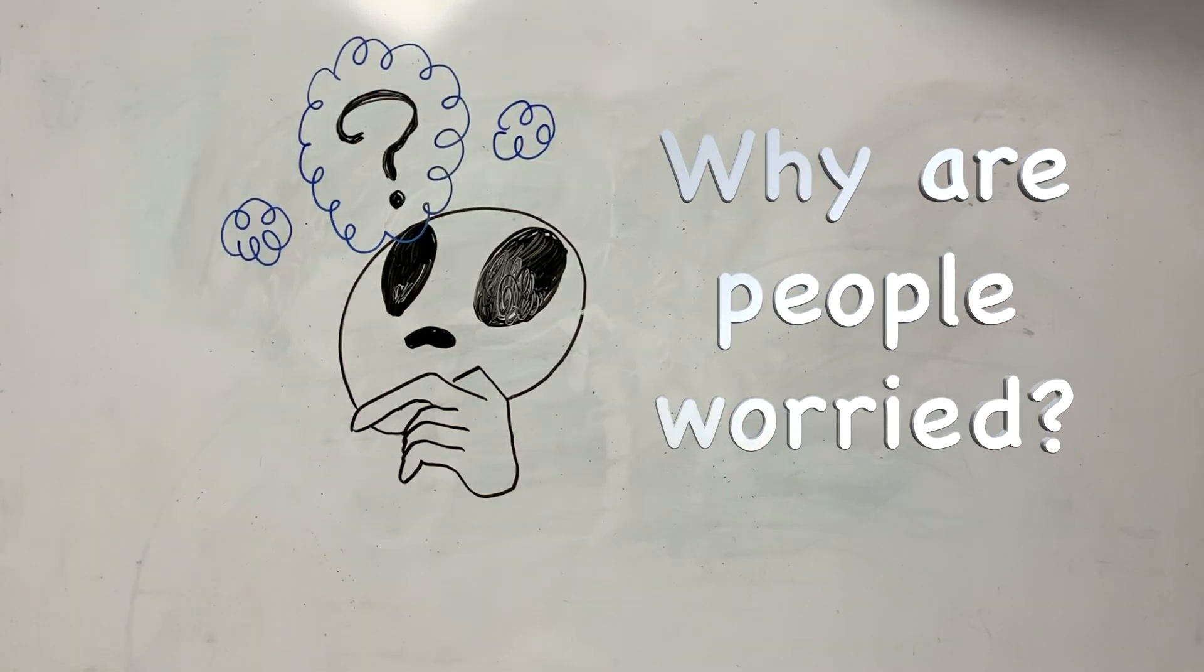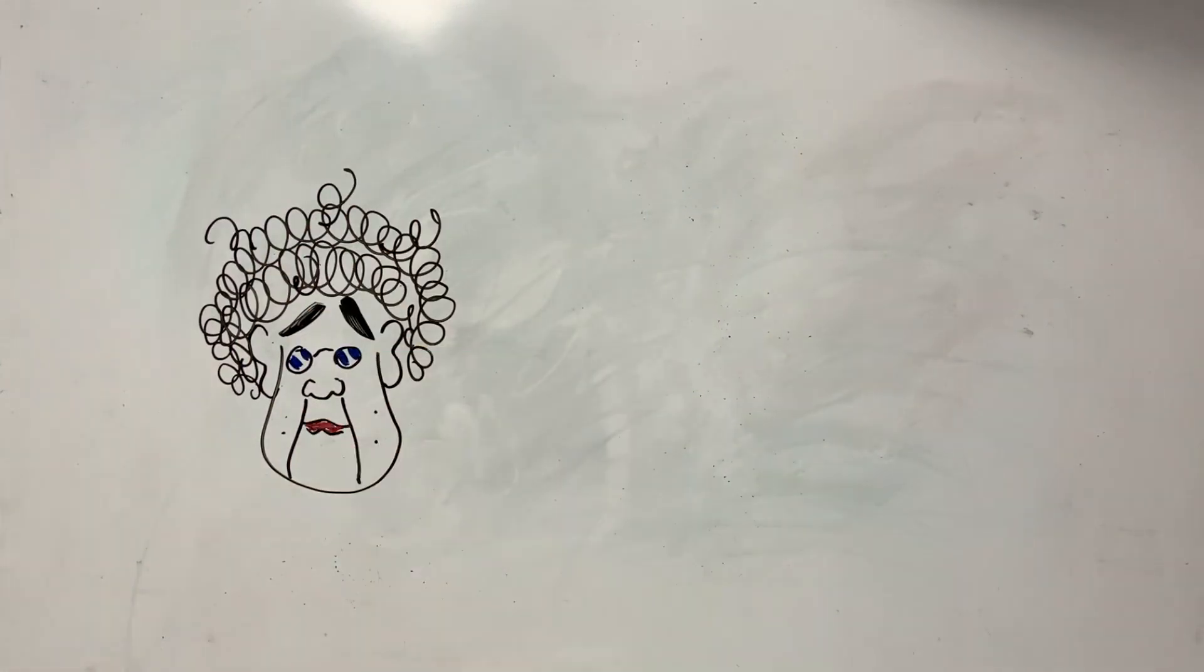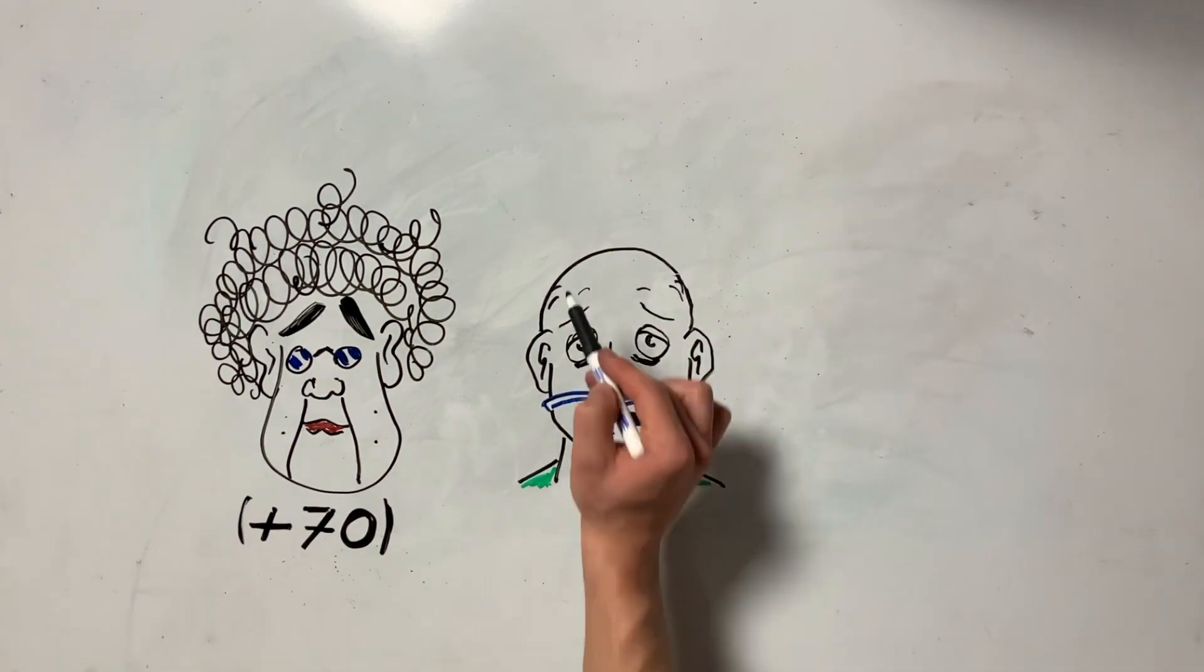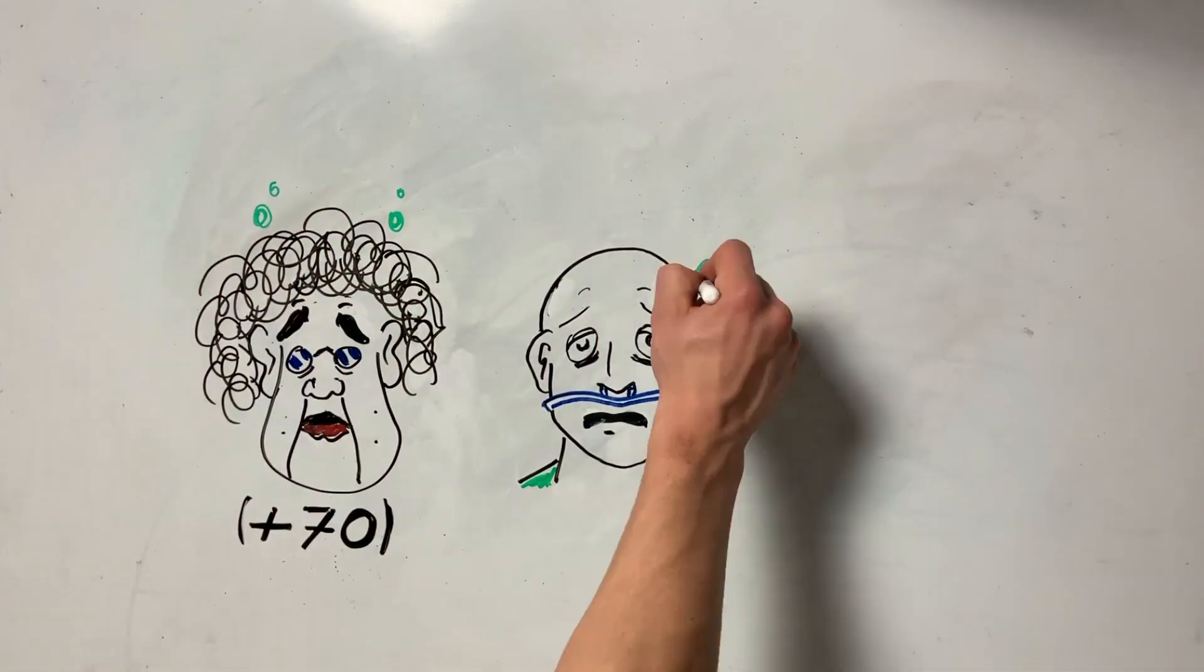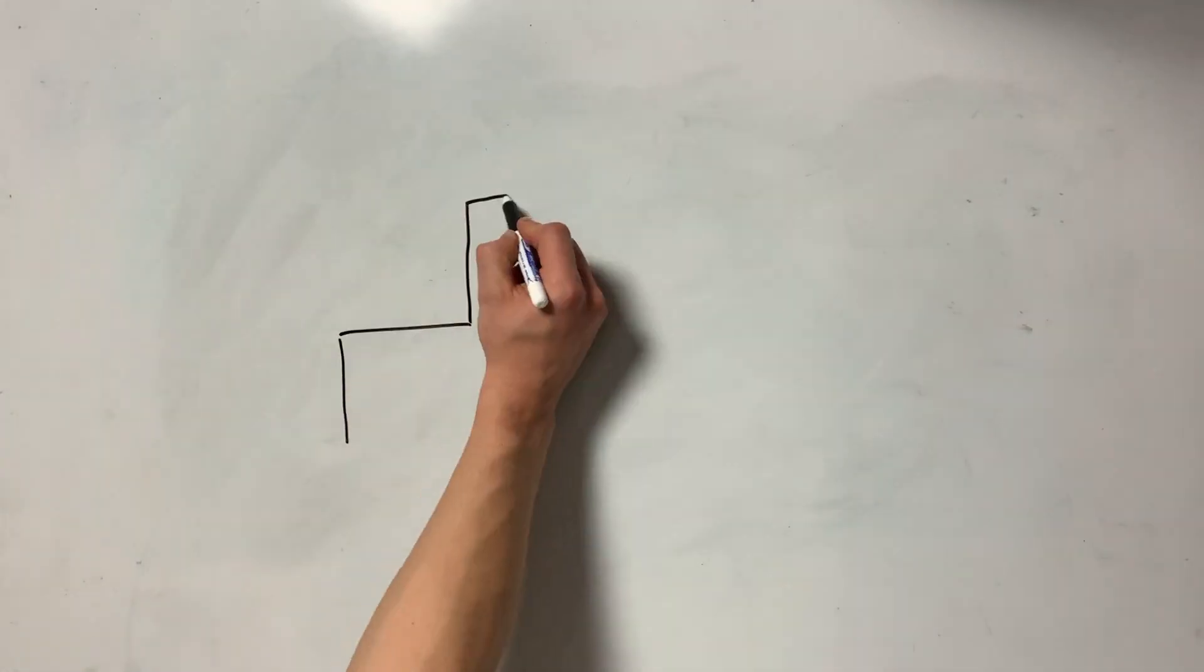So, why are people worried? Well, old people over 70 years old, or people who have health problems, can get very sick from the coronavirus, and some can even die. It's very dangerous for these people.